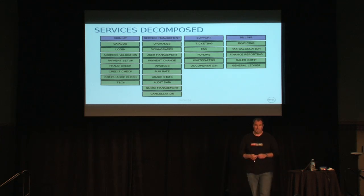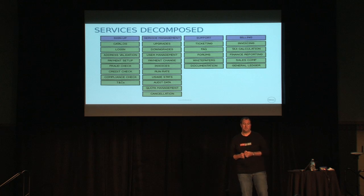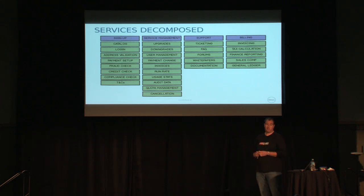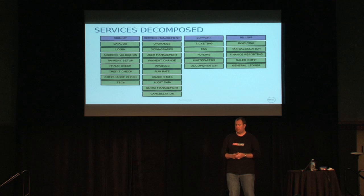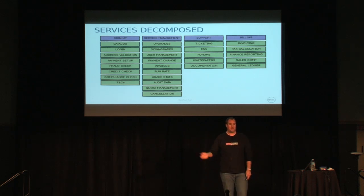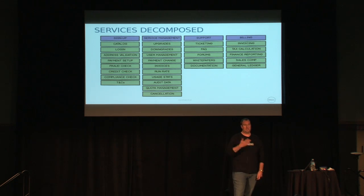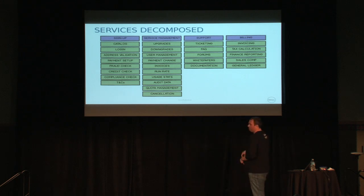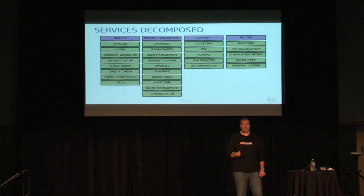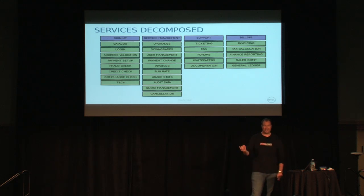We like to provide white papers and documentation around best practices — how to get your LAMP stack up and running in five minutes, that kind of thing. Last but not least in these pillars: billing. Once you've rated the data, you get an invoice for it. You've got the process of either emailing someone an invoice and reconciling payment with it if it's a purchase order, or charging someone's credit card. You'll also probably have an dunning process for when someone's credit card declines.